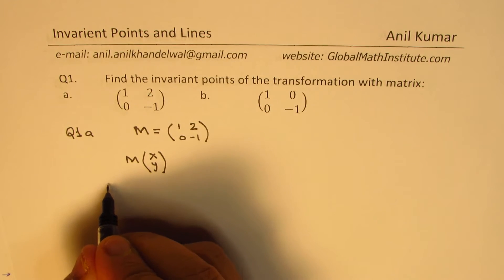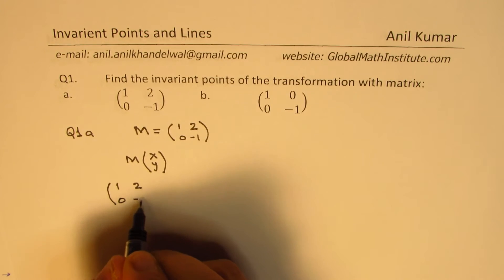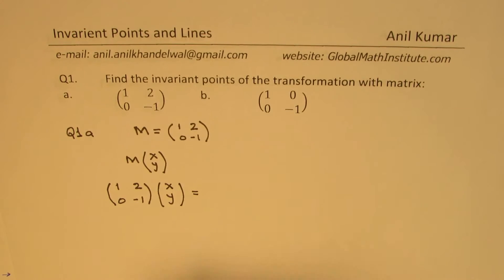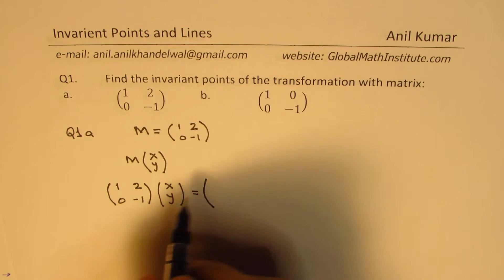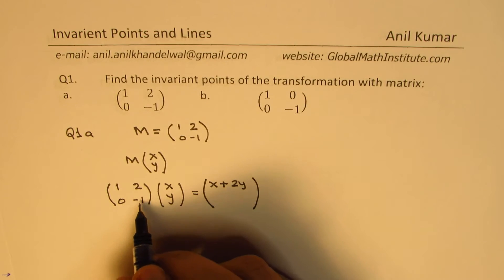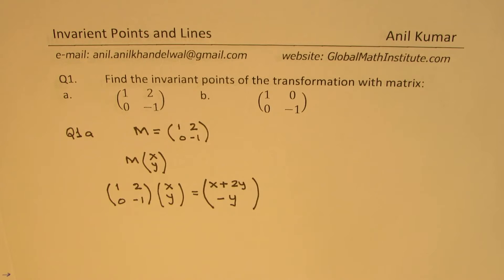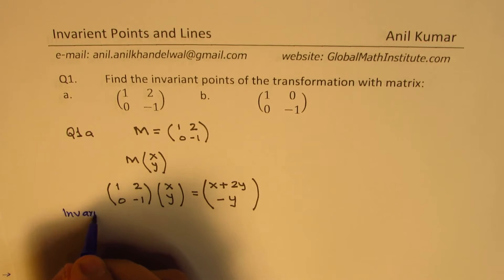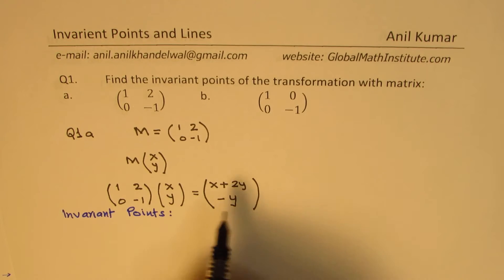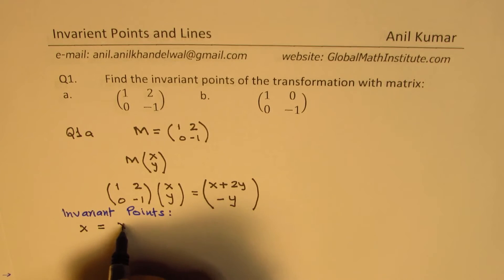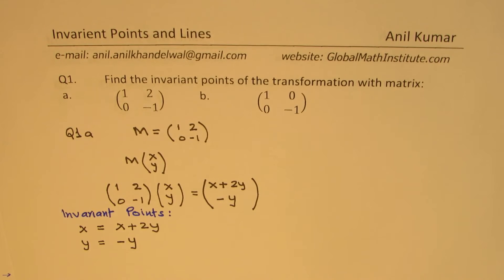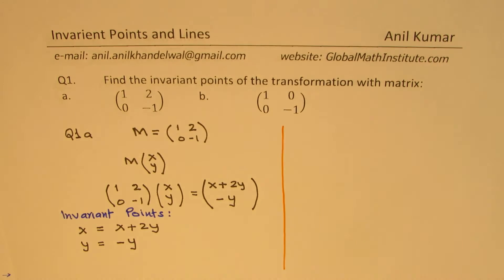Doing this multiplication, we get: 1·x + 2·y = x + 2y, and 0·x + (−1)·y = −y. So the image is (x + 2y, −y). For invariant points, we want the positions to be the same, giving us two equations: x = x + 2y, and y = −y. We now have to find points which satisfy both equations.